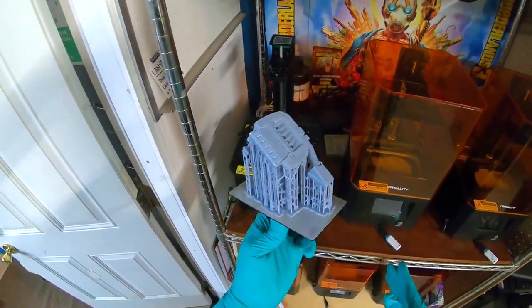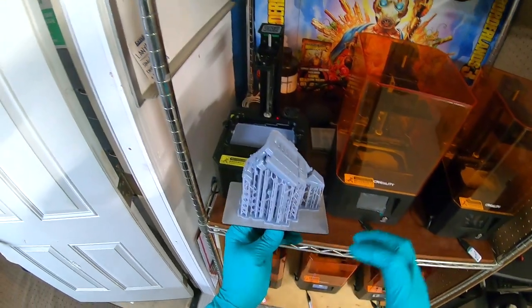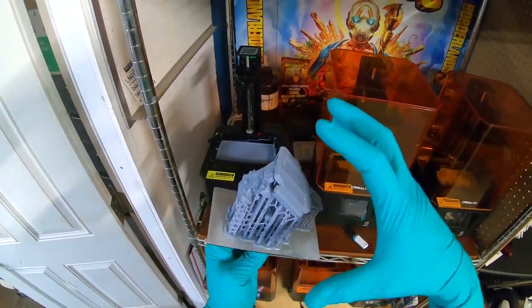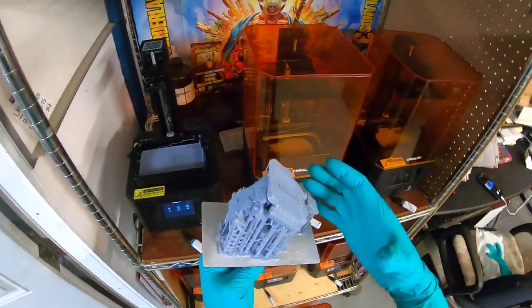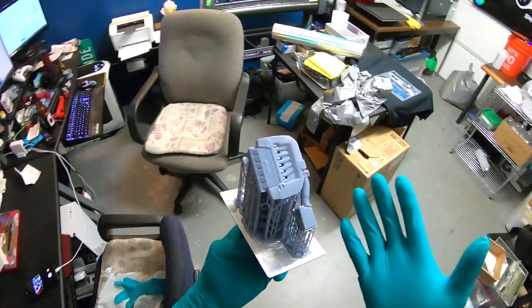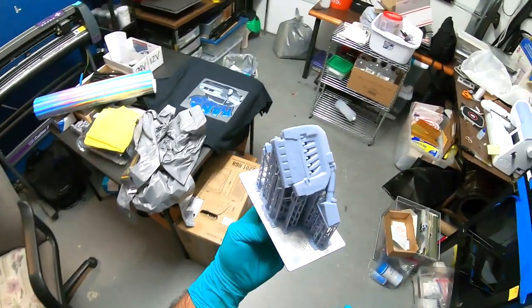Once it's done, you see the product before you. Now there's all these little things, what we call supports. These supports is what allows this print to happen. If these supports weren't here, the model will not print. That's pretty much the nature of it.